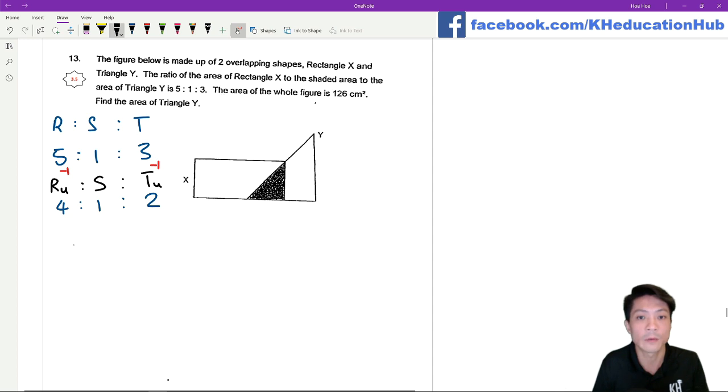Okay, so which means that the area of the whole figure, since it's 126, which means that 4 plus 1 plus 2, 7 units is going to be equal to 126. So 1 unit is going to be equal to 18.